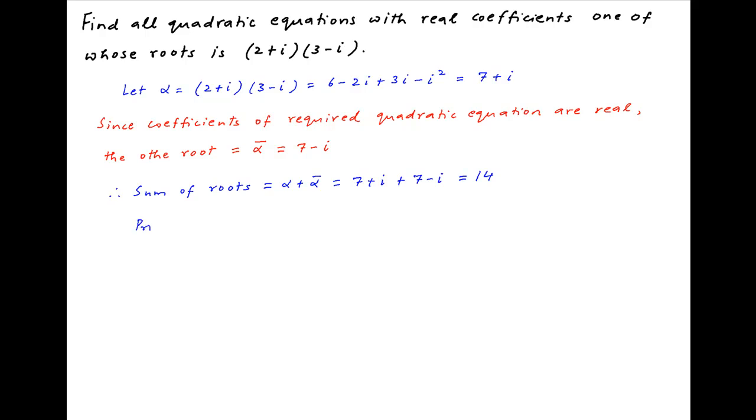And the product of the roots is equal to 7 plus i times 7 minus i, which is equal to 49 minus i square, which is equal to 50.